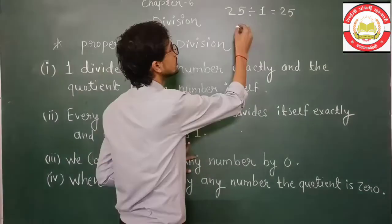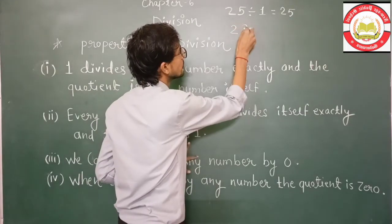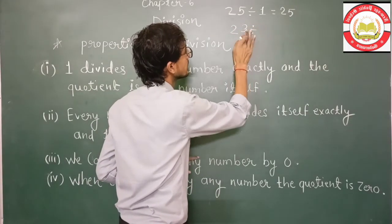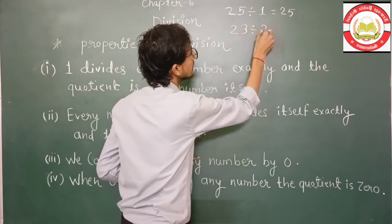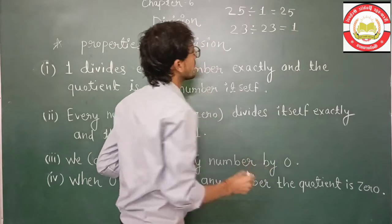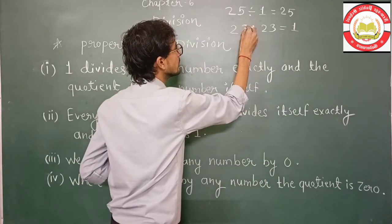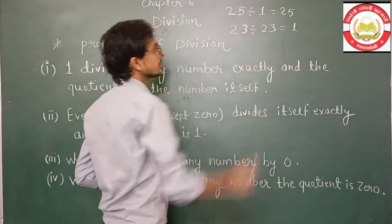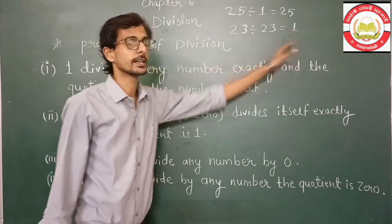Suppose that, 23 ko 23 se hi divide karenge, so answer will give you one. That means if you have the dividend and divisor same, then the answer will be one.